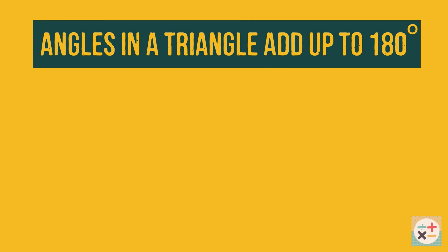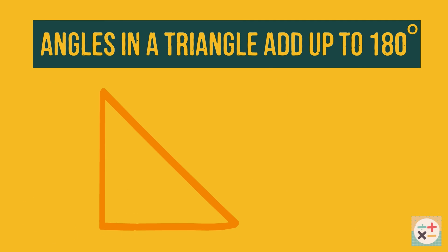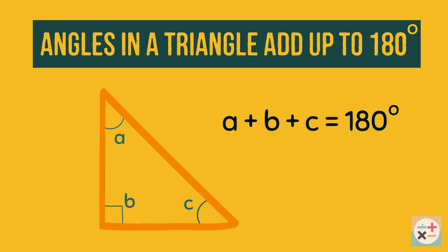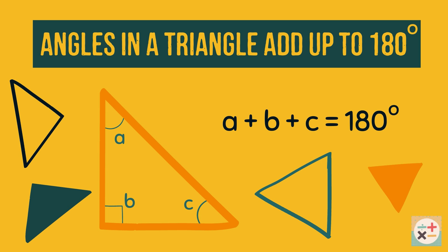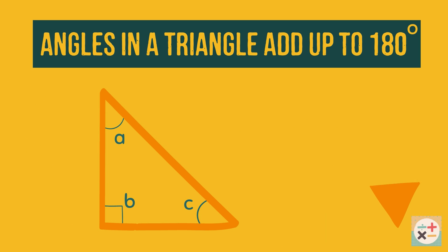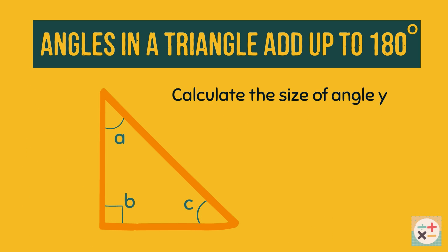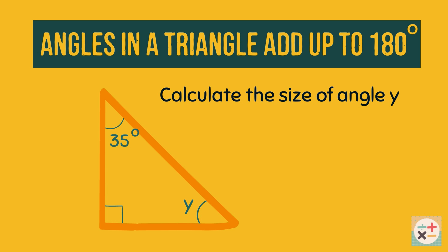Let's have a look at some of the basic rules. The first of these rules to remember is that angles in a triangle add up to 180 degrees. This is true for any triangle. We can use this fact to work out problems similar to this one, where we have to find the missing angle.